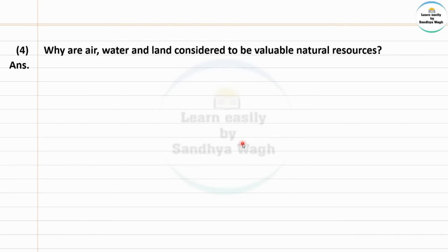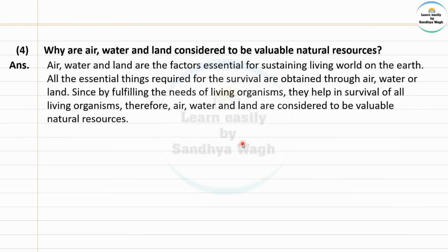Next question: Why are air, water and land considered to be valuable natural resources? Answer: Air, water and land are the factors essential for sustaining the living world on the earth. All the essential things required for survival are obtained through air, water or land. Since they fulfill the needs of living organisms and help in survival of all living organisms, therefore air, water and land are considered to be valuable natural resources.